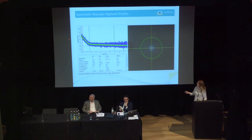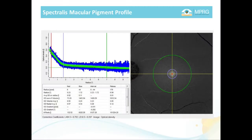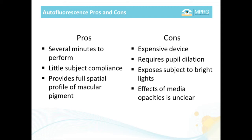This is what the output of that device looks like — you get a full spatial profile across the retina. The pros of autofluorescence: it only takes several minutes to perform, requires little subject compliance, and provides a full spatial profile. The cons: the device is very expensive, requires pupil dilation, subjects are exposed to bright levels of light, and the effects of ocular media are unclear. However, we're thinking about starting a research project to investigate the effects of cataracts on the Spectralis autofluorescence method.